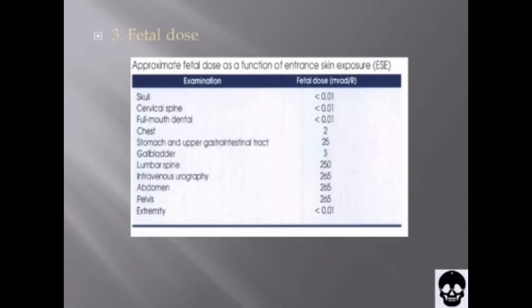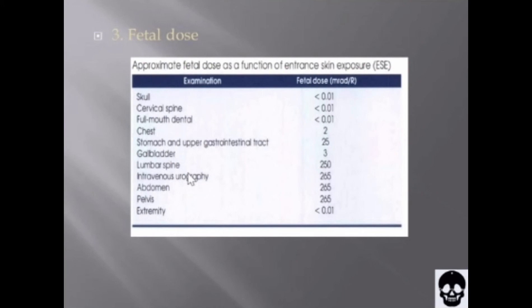Number three is fetal dose. Like most organ doses, fetal dose cannot be measured — it must be estimated, usually from phantom measurements or computer-generated calculations. The fetal dose is given in millirad per roentgen. Approximate fetal doses as a function of entrance skin exposure include: skull, cervical spine, dental, and chest at less than 0.01 millirad per roentgen; stomach and upper gastrointestinal tract, gallbladder, lumbar spine, intravenous urography, abdomen, pelvis, and extremity also at less than 0.01 millirad per roentgen.